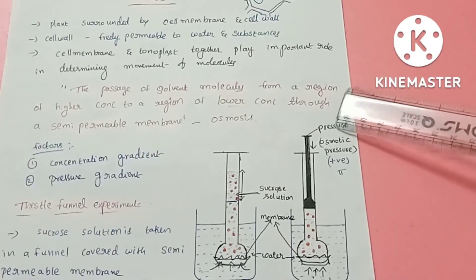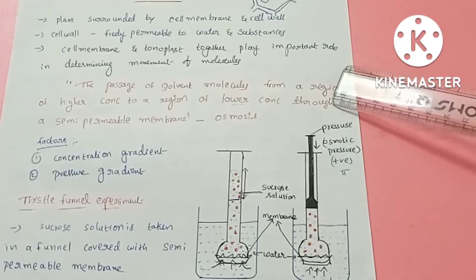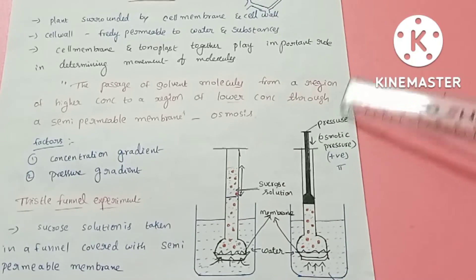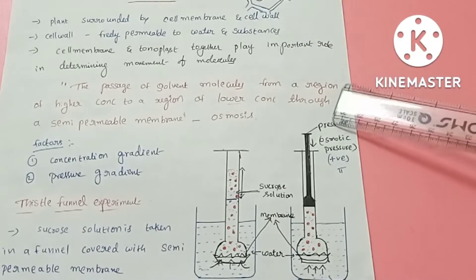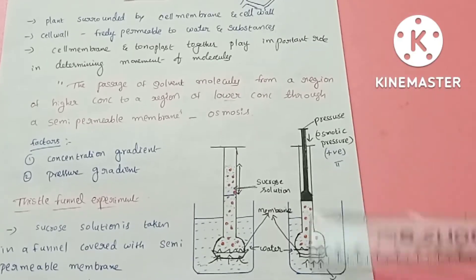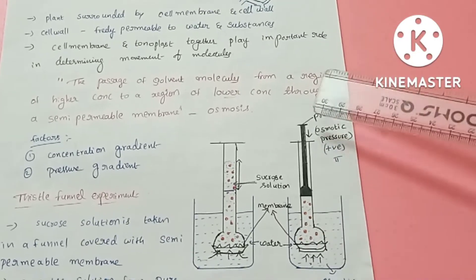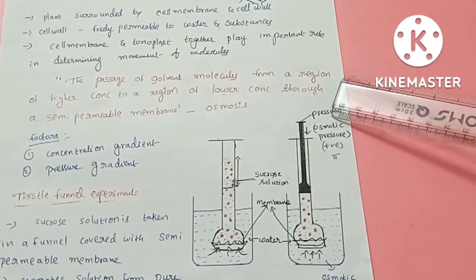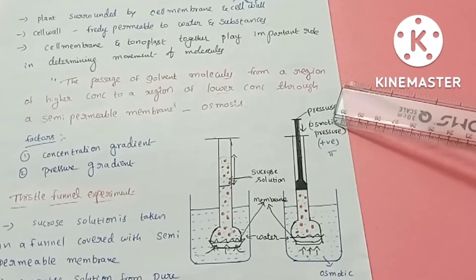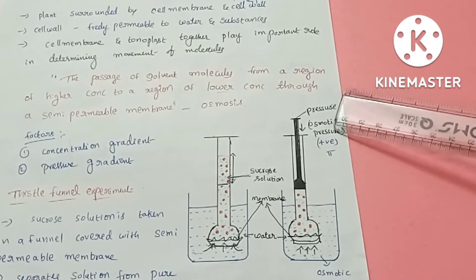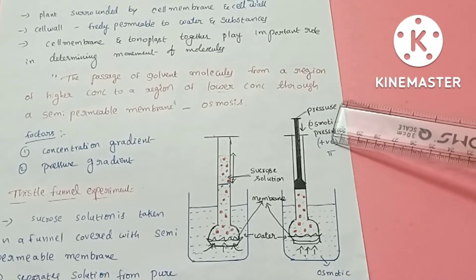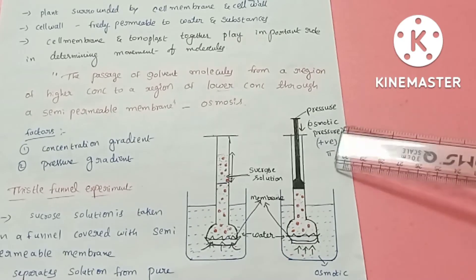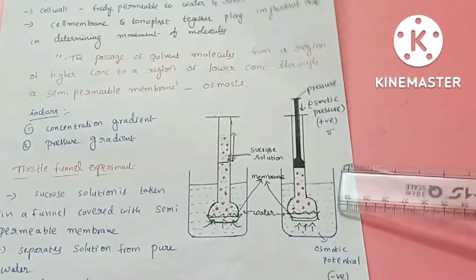Osmotic pressure is the pressure required to prevent the entry of water molecules from diffusing through a semi-permeable membrane. Osmotic pressure is always positive and is denoted by phi (π).